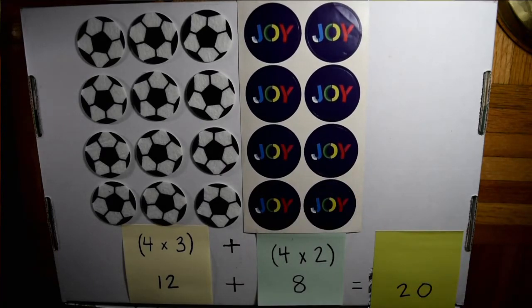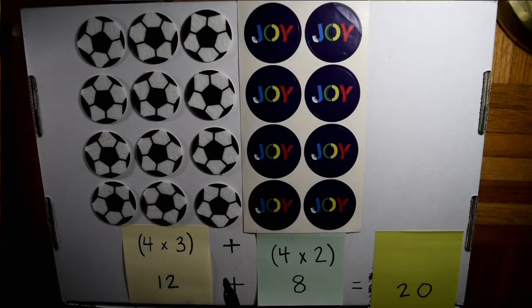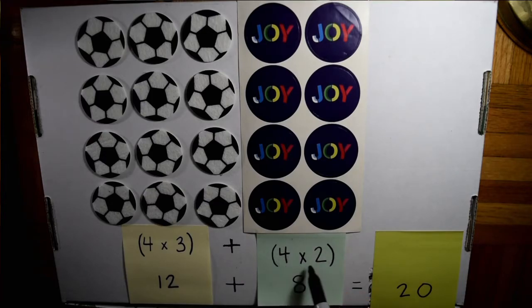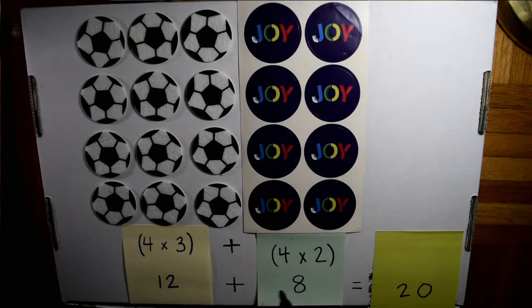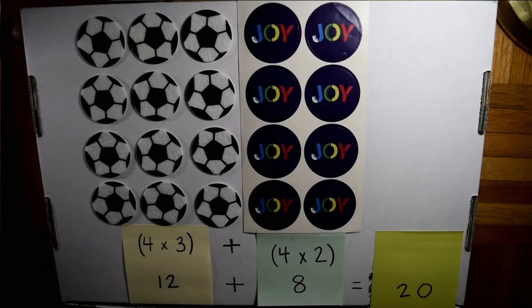When we use parentheses in math, that just tells us we need to solve what's inside the parentheses first. So we would solve four times three first, which we did — that equals 12. And then we would solve four times two, because that's inside the parentheses, and we already did that — that equals eight. So then once we've solved what's in the parentheses, we can add these two numbers together, because that's the operation that goes between the two parentheses. And we already did 12 plus eight equals 20.